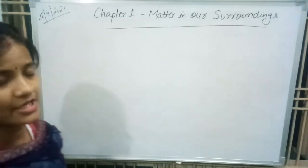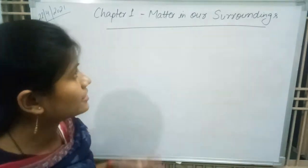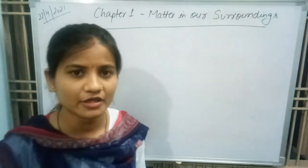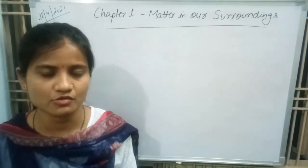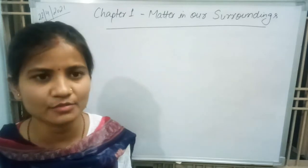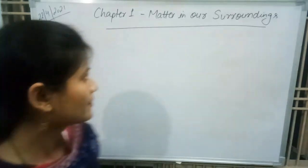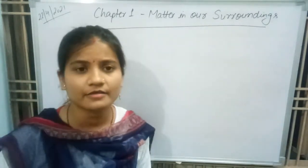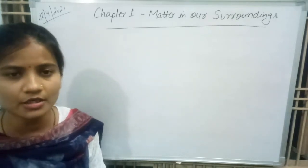Now the question arises: what is matter? Matter is a thing which is present in our environment. The air we breathe, the food we eat, the stone, clouds, sky, table, chair, pen, pencils, books, etc. — each thing is a matter. The definition of matter is that anything that occupies space and has mass is called matter.